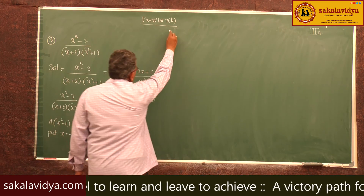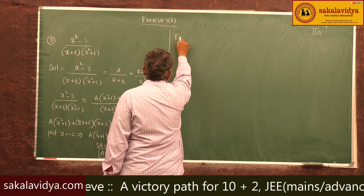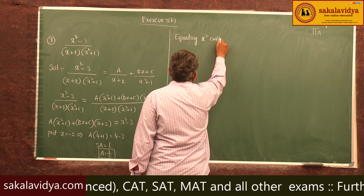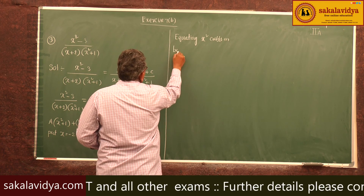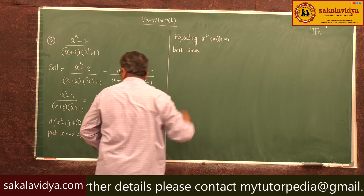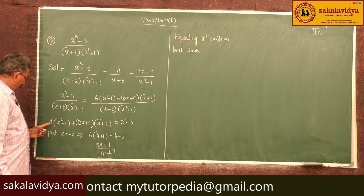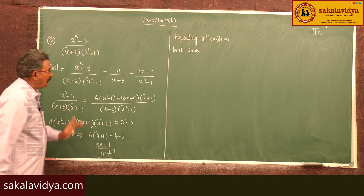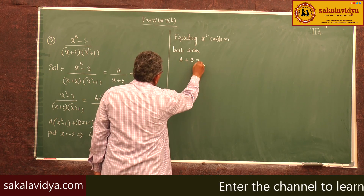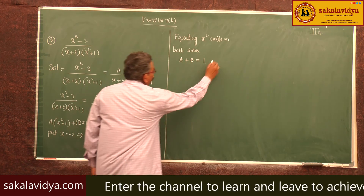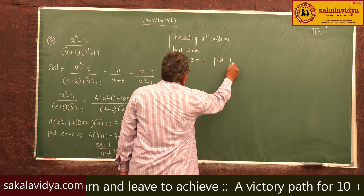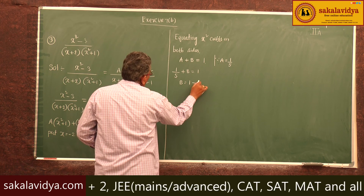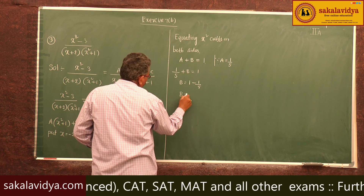Equating x² coefficients on both sides: A + B = 1. Substituting A = 1/5, we get B = 1 - 1/5 = 4/5.